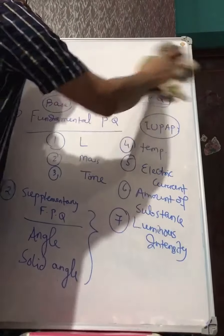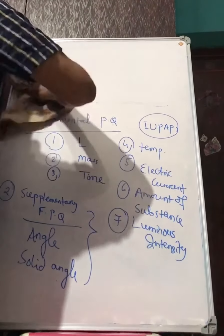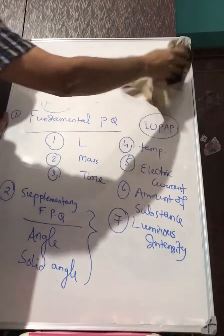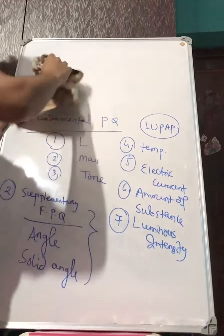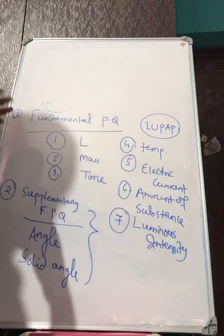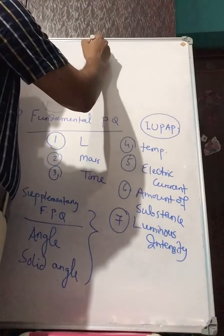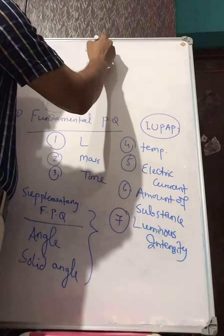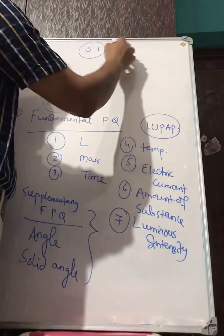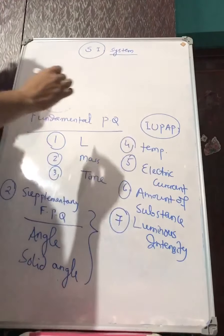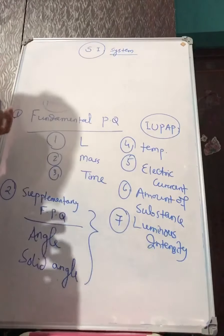In all these fundamental physical quantities, there is a unit associated with each one when we do the measurement. Some unit is decided by the international system — the SI system — an internationally accepted system that is followed in all countries of the world.